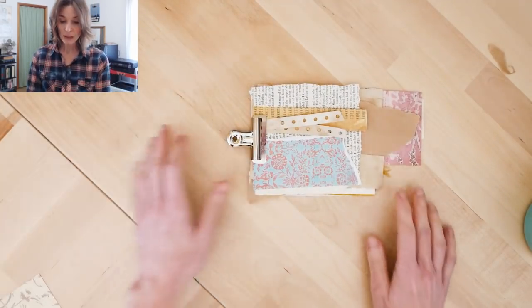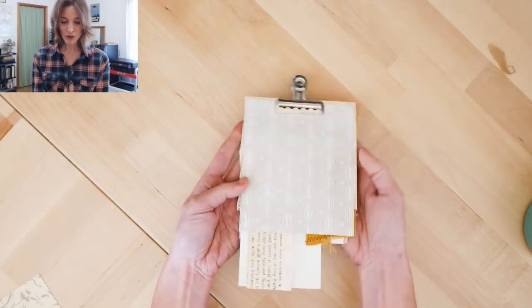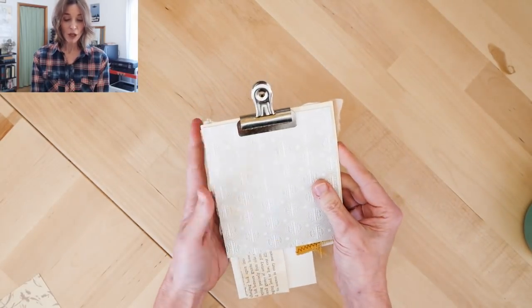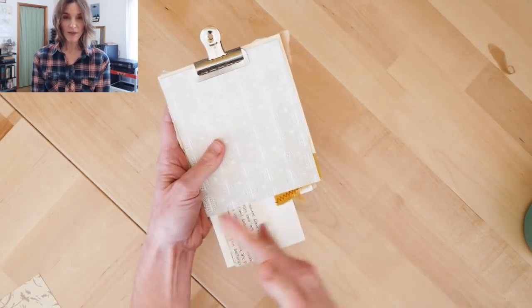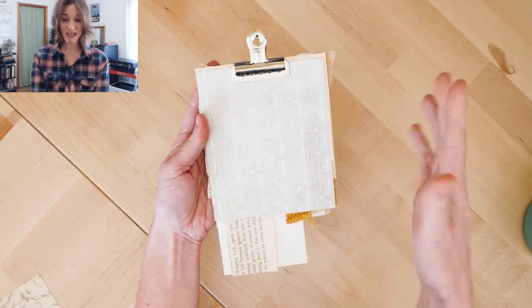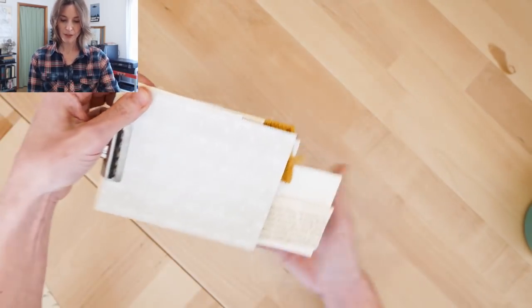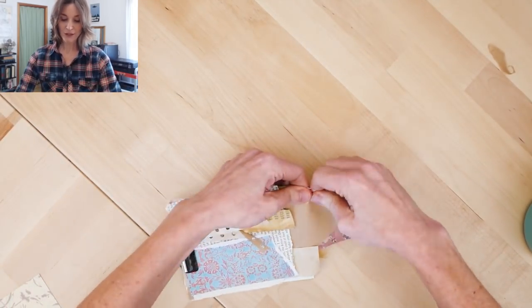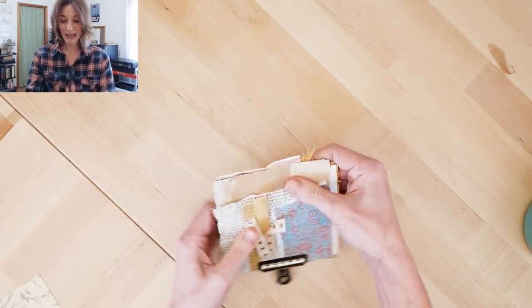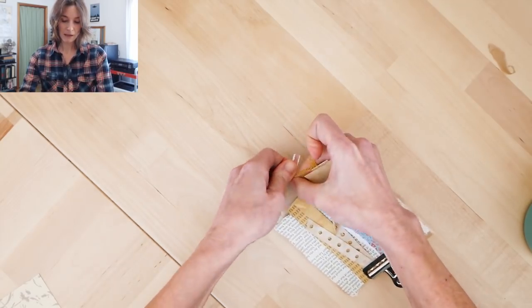So now that we have all of this pretty much kind of evened up, you can turn it over and you can see that base piece that we put down first. You can at this point cut around that and make it all nice and even and make everything kind of match up with that base thing, or you don't have to. There's no rules here.